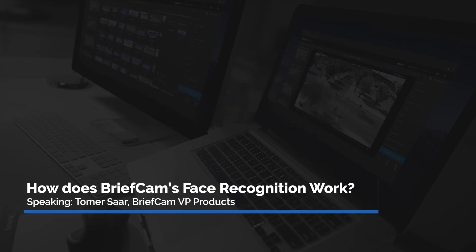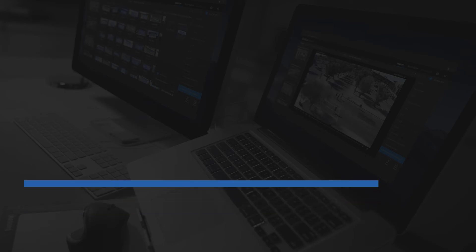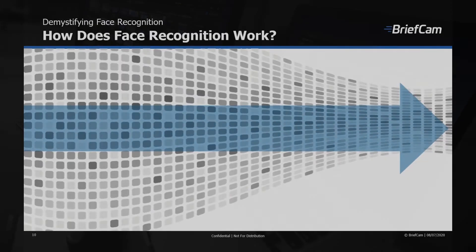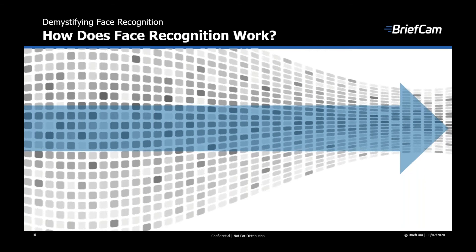Let's take a quick look at how face recognition works. The technology powering face recognition is complex. BriefCam has implemented several steps when processing the video. BriefCam first uses its head detection abilities. In this way, BriefCam can focus its search on faces only from the detected head, resulting in quicker and more efficient processing.